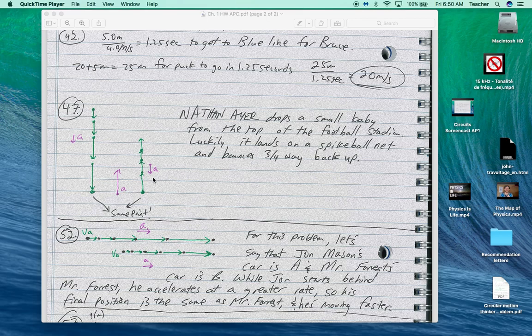that actually should be affecting them in a manner where it would affect the amount of time this takes to go up. So I think the fact that they've got the same number of arrows up and down is a problem. At any rate, my story was Nathan airdrops a small baby from the top of a football stadium, lucklet lands on a spike ball net, and bounces three-quarters of the way back up.